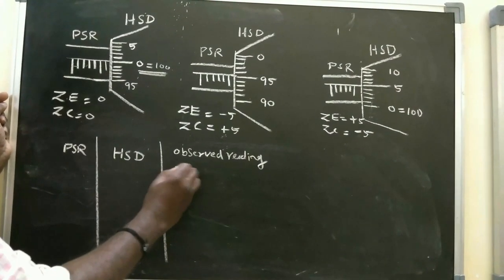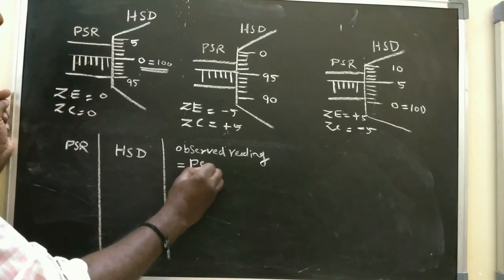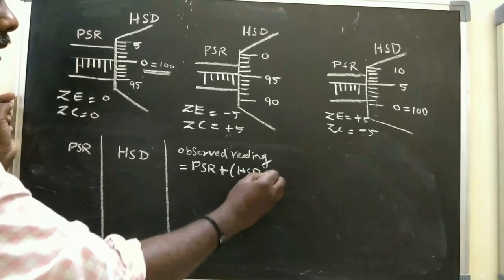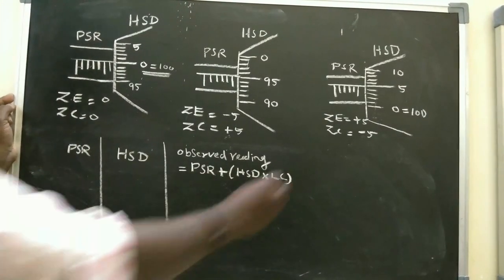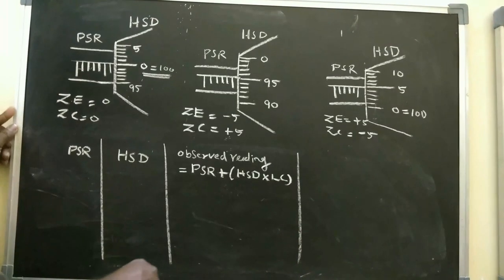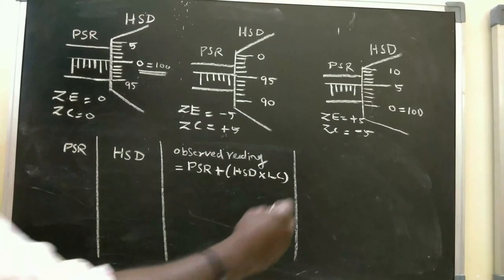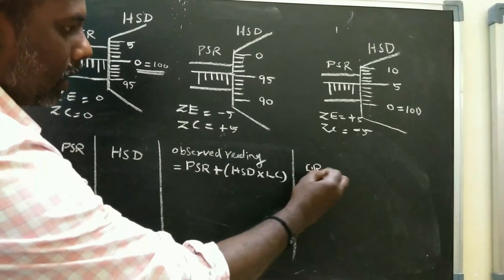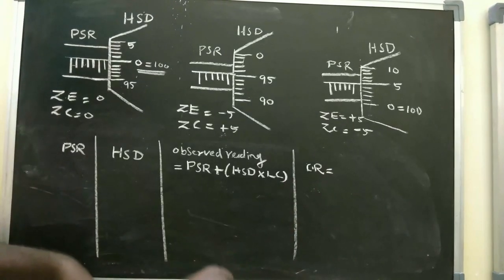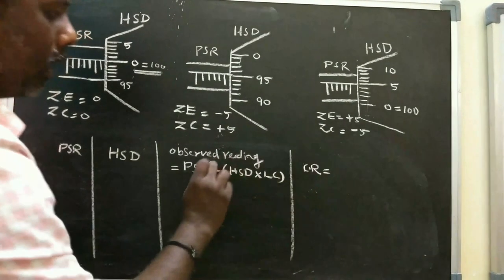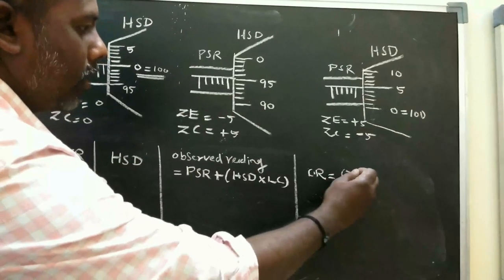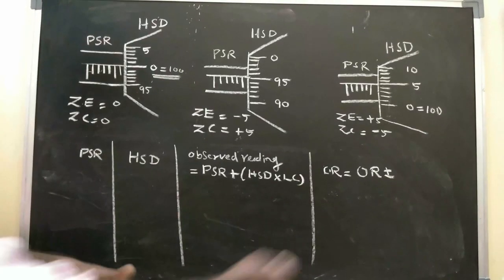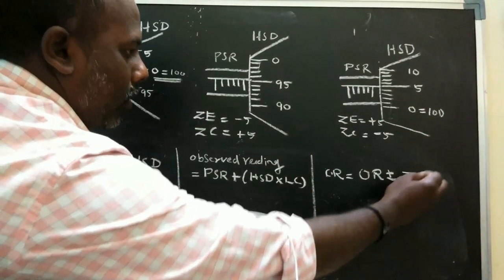The observed reading equals PSR plus HSD times least count. The least count is 0.01mm. To find the correct reading, we use the formula: correct reading equals observed reading plus or minus the zero correction.